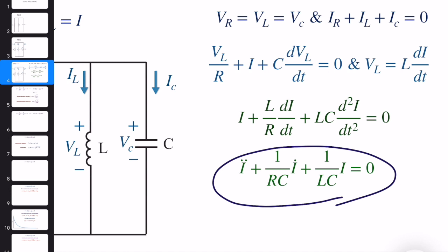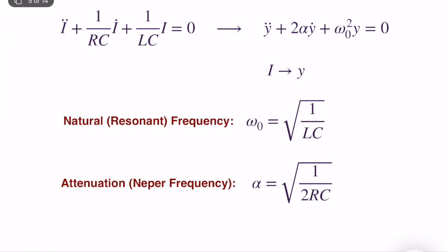To analyze and solve this ODE, we put it in a different standard form. Our goal is to identify the standard parameters. We compute omega-naught — the natural or resonant frequency — equal to one over the square root of LC. In different textbooks, omega-naught can be replaced with omega_n, which is technically the same.